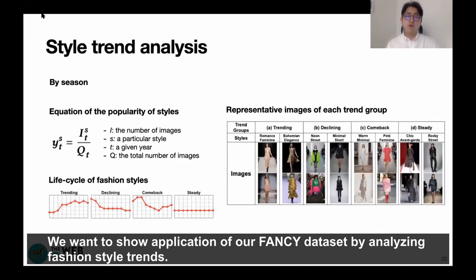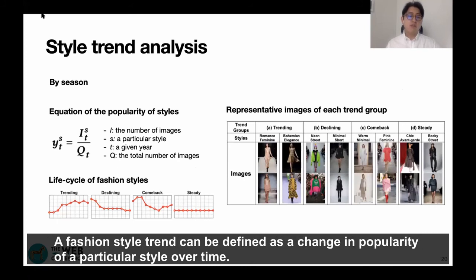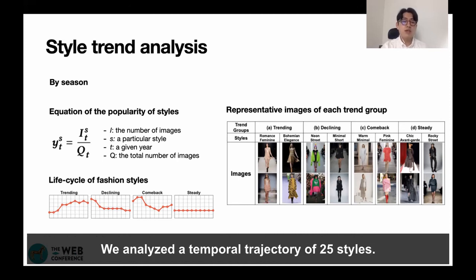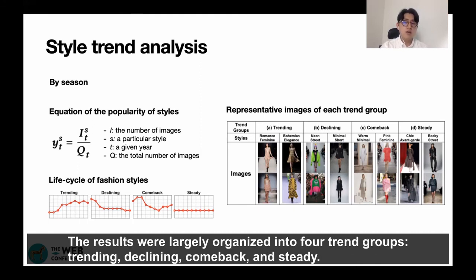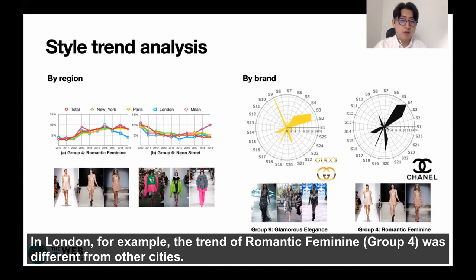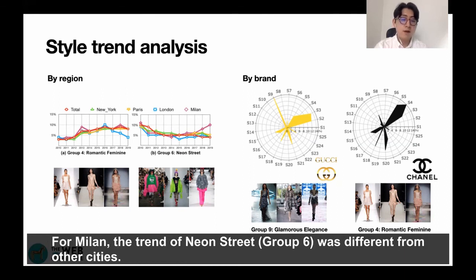We want to show the application of our FANCY dataset by analyzing fashion style trends. A fashion style trend can be defined as a change in popularity of a particular style over time. We identified the frequency of each style shown in fashion over 10 years and analyzed style trends, organizing the temporal trajectory of 25 styles into four trend groups: trending, declining, comeback, and steady. In the trend analysis by region — covering the four main fashion weeks in New York, Paris, Milan, and London — each city showed a different pattern. In London, the trend of the romantic feminine group four was different from other cities, while in Milan, the trend of neon straight group six was different from other cities.